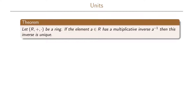For the units in our ring we have the following theorem. If the element a in R has a multiplicative inverse, called a to the minus 1, then this inverse is unique. So not only do we have the additive inverse that is unique, but we also have the theorem that says the multiplicative inverse is unique.